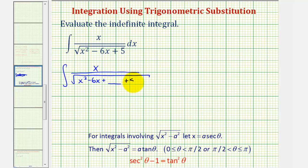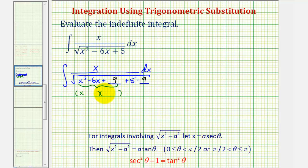And then we have plus five. Whenever we add here, we'll have to subtract to maintain the equality. To complete the square, we take half of the coefficient of x and then square it. Half of negative six is negative three, and negative three squared is positive nine. So we'll add nine here and subtract nine here. Factoring this gives two binomial factors; the factors of nine that add to negative six are negative three and negative three. We have a perfect square trinomial, which we can write as the quantity x minus three squared.